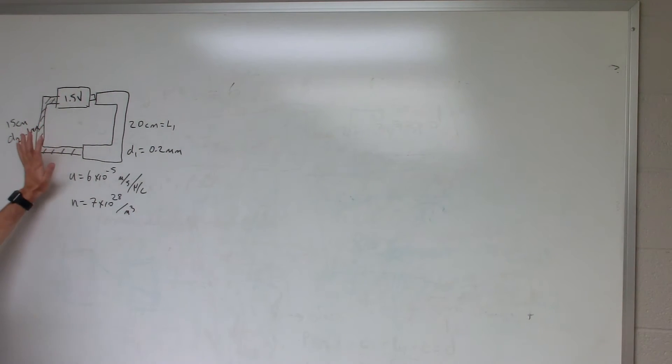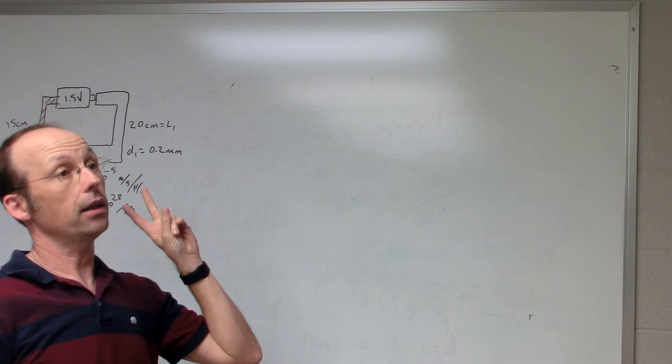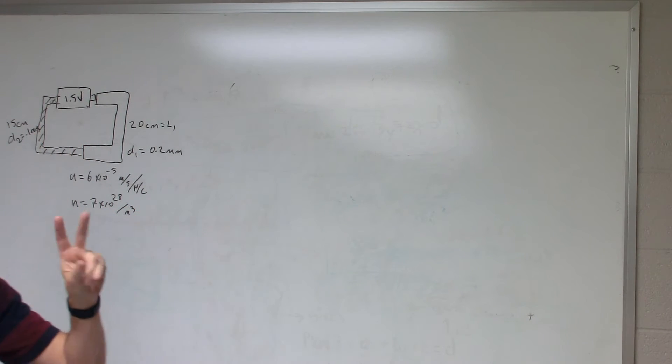Okay, so I've already drawn the problem on the board. The idea is that we have two different wires of different length and different thicknesses hooked up to a battery. We want to find the electric field in both wires and the conventional current in both wires.